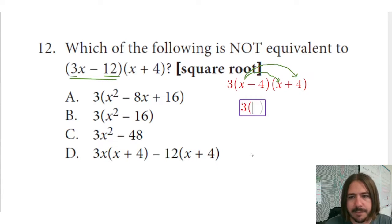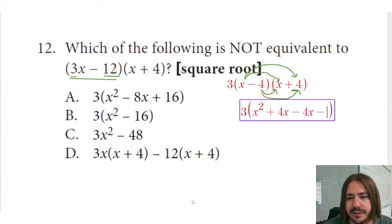So 3 times x times x is going to be x squared. x times 4 is going to be plus 4x. But I also need to distribute the second term in the first binomial, the i and the l in FOIL. So negative 4 times x and then negative 4 times 4 give me minus 4x and then minus 16.